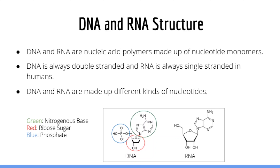The ribose in RNA has one more oxygen atom than the ribose found in DNA. Also, RNA nucleotides do not contain thymine — they contain uracil instead. The nitrogenous bases which make up DNA and RNA are grouped into two types: pyrimidines and purines, based on what type of ring structure they have. Here the basic structure of a nucleotide is highlighted: the phosphate group, the ribose sugar, and the nitrogenous base — a special molecule containing a ring structure with many nitrogen atoms.